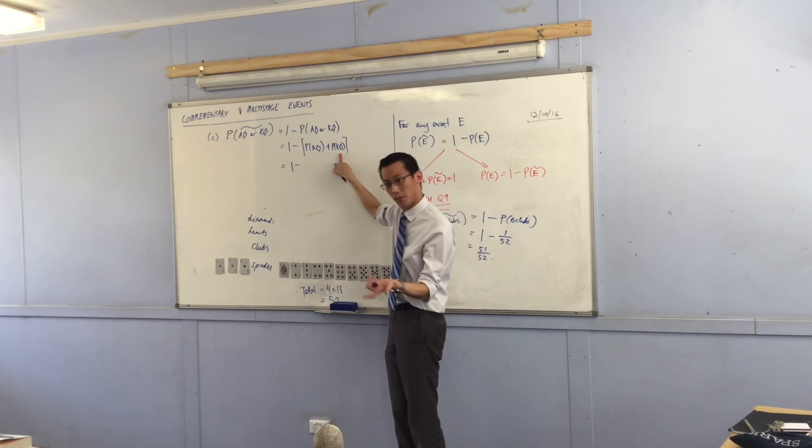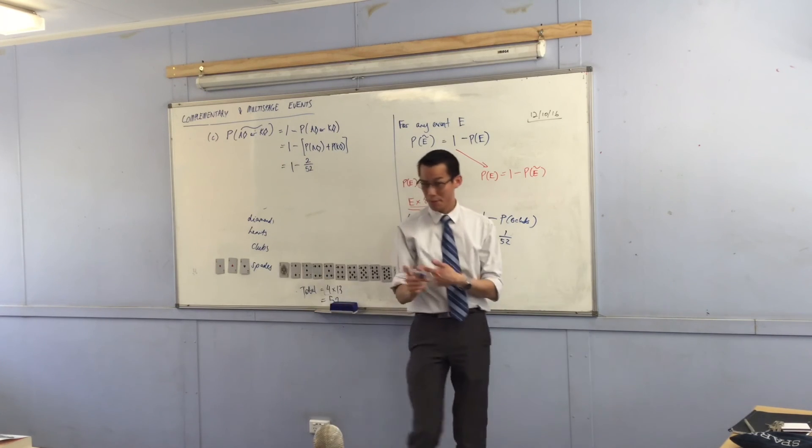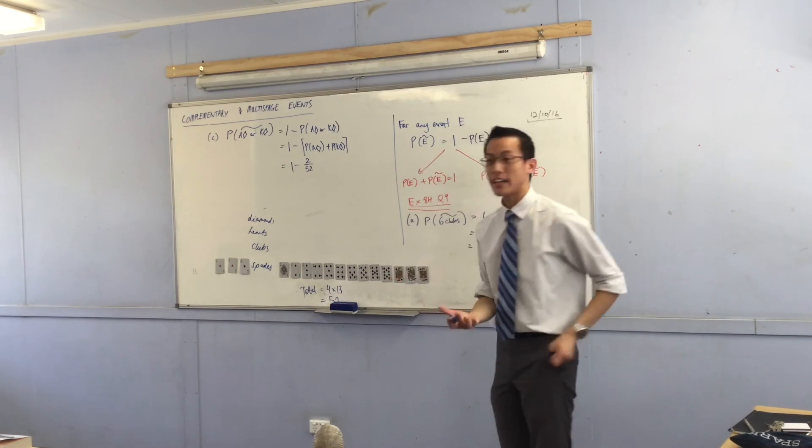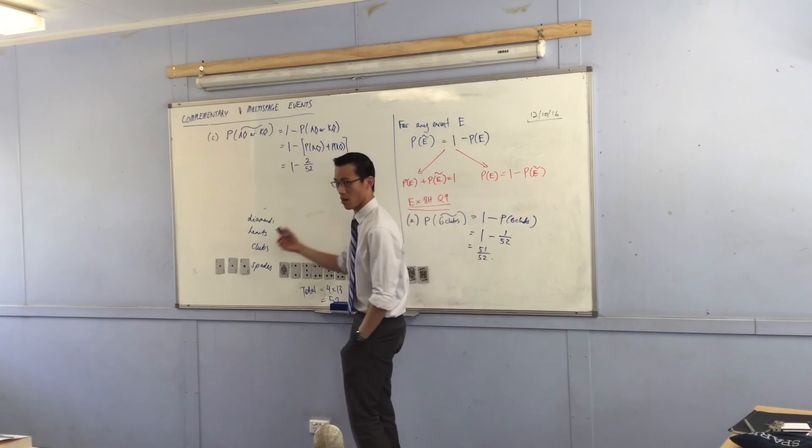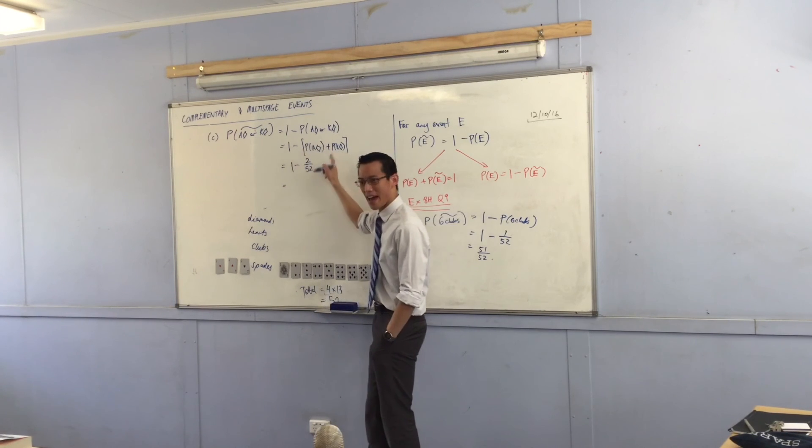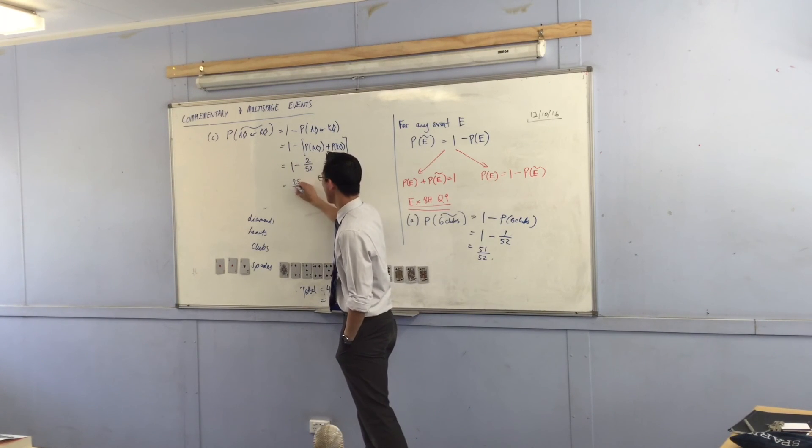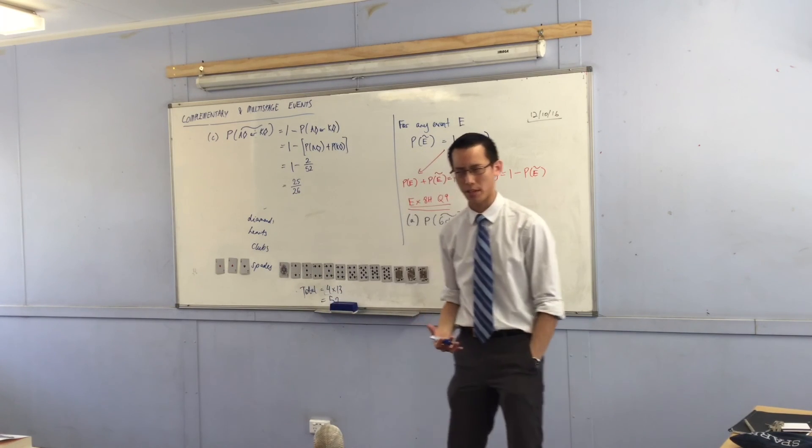Two. Two on 52. It's probability, so it has to be a fraction. I can simplify that. Of course, two on 52 is one on 26. So, if you take away one on 26, that leaves behind 25 on 26.